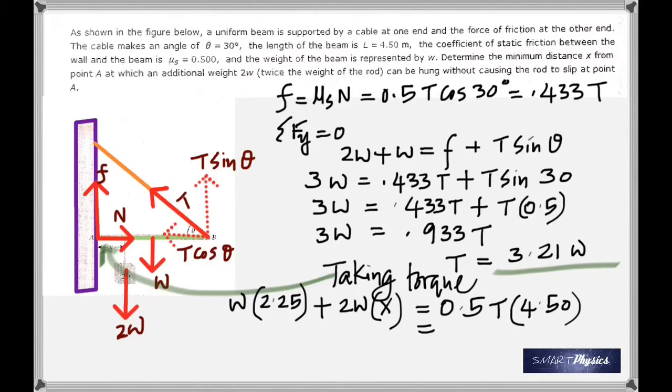W is right at the center. That's why this distance is half of 4.5, which is 2.25. That's why we multiply that with 2.25. And 2W is at a distance x, so that's why we multiply 2W with x. And 0.5 T, which is T sin 30, is at a distance of the length of the beam, which is 4.50. So that's why we get the counterclockwise that way.